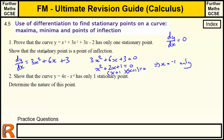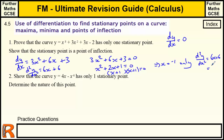To show it's a point of inflection, differentiate the gradient function again to get the second derivative, written as d²y/dx². Differentiating dy/dx = 3x² + 6x + 3 gives d²y/dx² = 6x + 6. Substituting x = -1 gives minus 6 plus 6, which equals 0, therefore it's an inflection. When the second derivative equals zero, it's an inflection; when it's less than zero, it's a maximum; when greater than zero, it's a minimum.